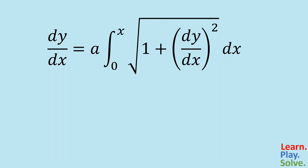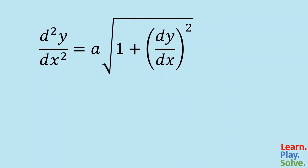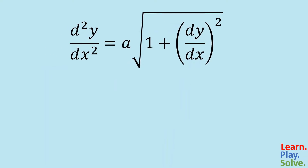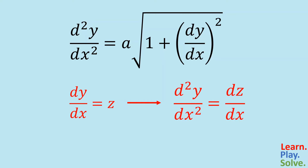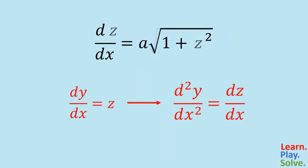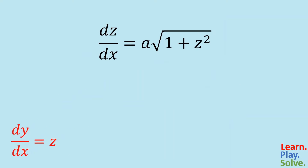To solve it, we are first going to take the second derivative. Differentiating will essentially cancel out the integral, thanks to the fundamental theorem of calculus. Now, if we let the first derivative dy/dx equal z, then the second derivative will equal dz/dx. Substituting these in will simplify the differential equation and leave us with something that's much easier to solve.